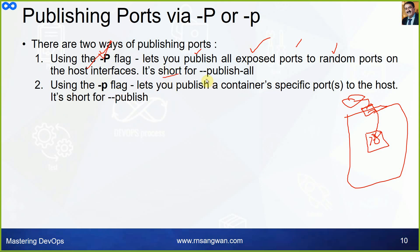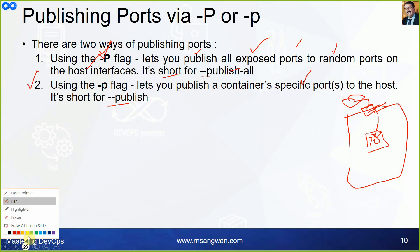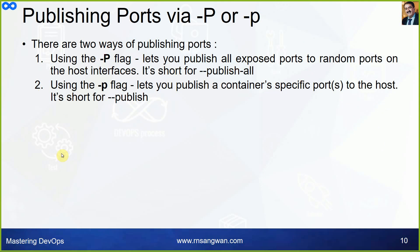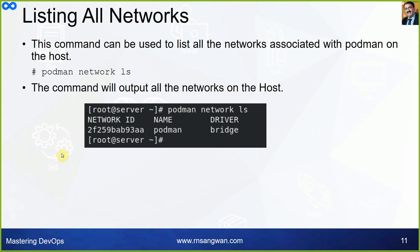In short form, uppercase `-P` means publish all (random port mapping); lowercase `-p` or `--publish` means you specify a specific port mapping. Uppercase P gives a random host port; lowercase p gives a specific port you define. We have been using lowercase `-p`. To list all networks, use `podman network ls` or `podman network list`, which shows you the network ID, name, and driver.